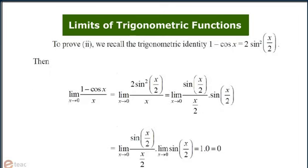To prove number 2, we call the trigonometric identity 1 minus cos x equals to sin square x by 2. Now replacing 1 minus cos x with this identity, writing sin square x by 2 as sin square x by 2 into sin square x by 2, dividing numerator and denominator by 2, and then finally evaluating the limit we get the answer equal to 0.